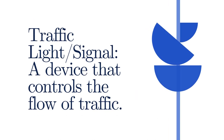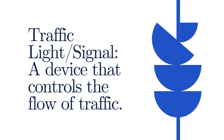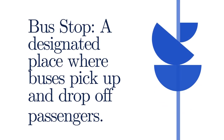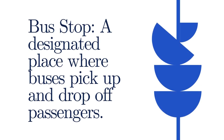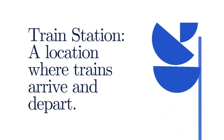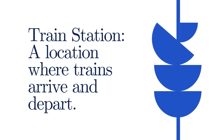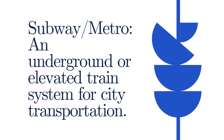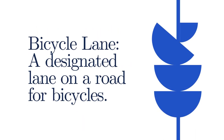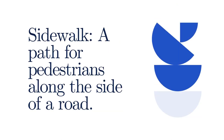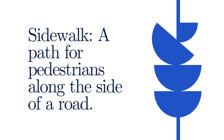Traffic light: a signal device that controls the flow of traffic. Bus stop: a designated place where buses pick up and drop off passengers. Train station: a location where trains arrive and depart. Subway or metro: an underground or elevated train system for city transportation. Bicycle lane: a designated lane on a road for bicycles. Sidewalk: a path for pedestrians along the side of a road.